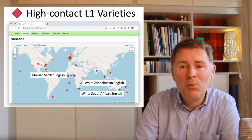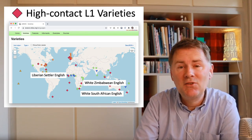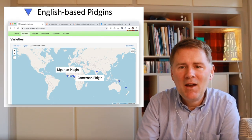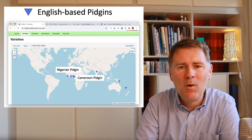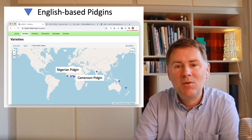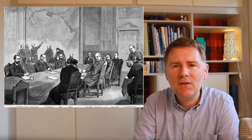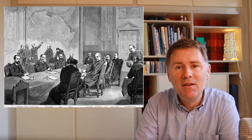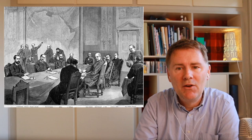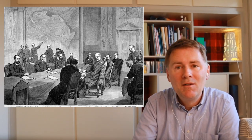These varieties are spoken by descendants of English-speaking colonizers who settled in those areas. Liberian Settler English is based on American English, while White Zimbabwean English and White South African English are based on British English. There are also a number of English-based pidgins, all found in West Africa — Nigerian Pidgin and Cameroon Pidgin came about through trade colonies. Colonialism in Africa began in the 17th century with trading posts along the West African coast, and the British established a settlement colony in Sierra Leone in 1787.